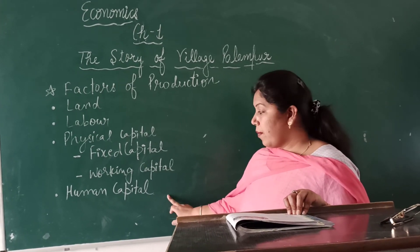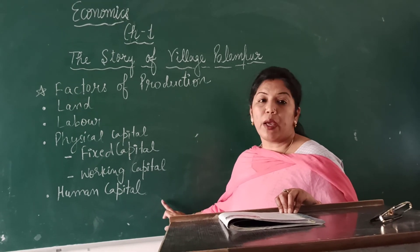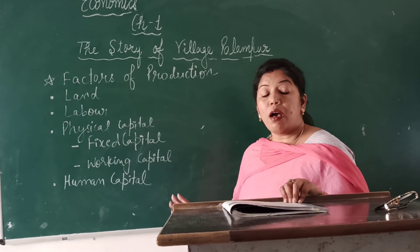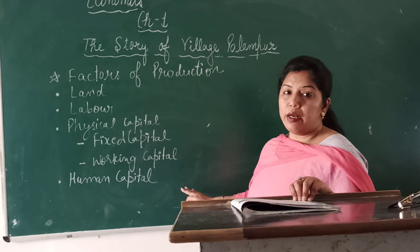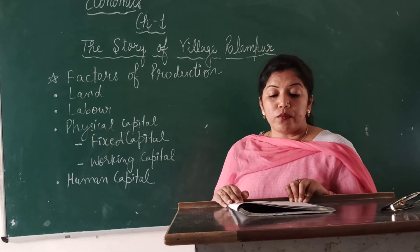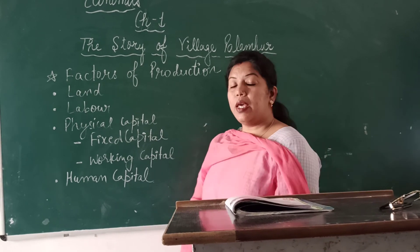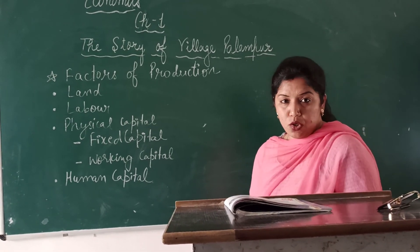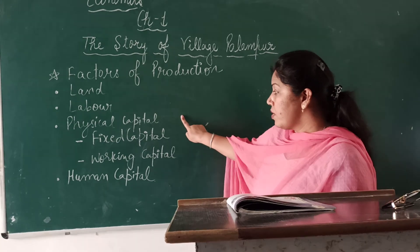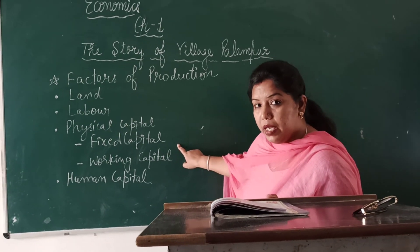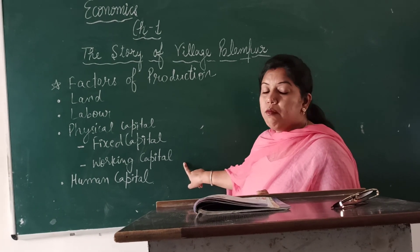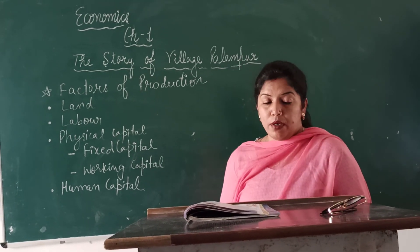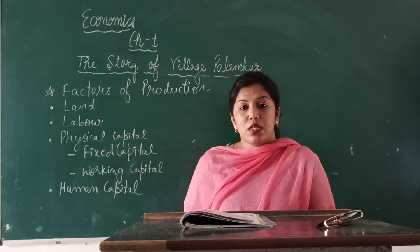The next requirement is human capital — which means human knowledge and knowing how to combine all the factors of production effectively. So the four factors of production are: land, labor, physical capital — which includes fixed capital such as tools, machines, and buildings, and working capital such as raw materials and money in hand — and human capital. That's all for today. Thank you. Stay home, stay safe.